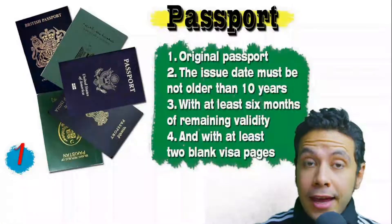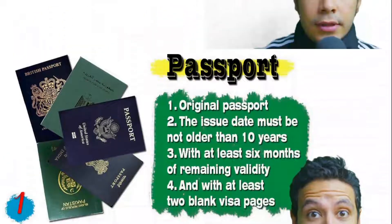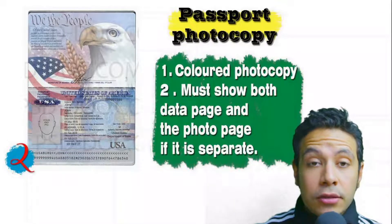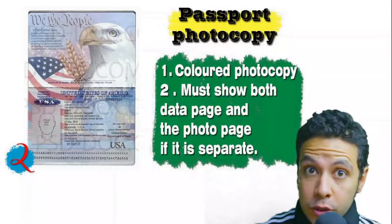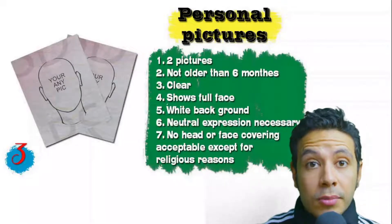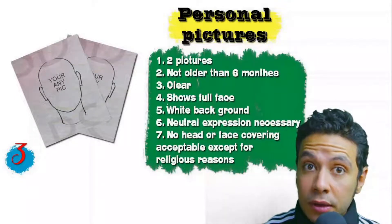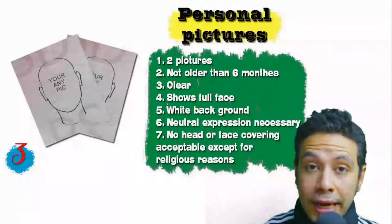Regarding the required documents: your passport must be original, not older than 10 years, with at least six months of remaining validity and at least two blank visa pages. A photocopy is often needed — preferably colored, showing both the data page and photo page. For personal pictures, you need at least two — they must be new, not older than six months, clear with your full face showing, preferred with a white background, and with a normal neutral expression. No head or face covering is acceptable except for religious reasons.